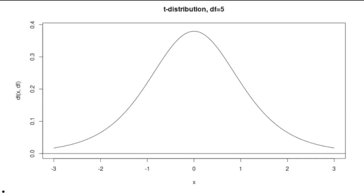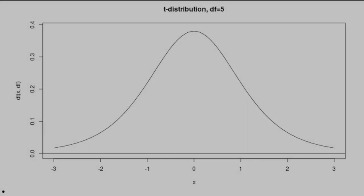A t distribution looks an awfully lot like a standard normal distribution. It has a mean of 0 and a standard deviation somewhat larger than 1. Here's a t distribution with degrees of freedom of 5.